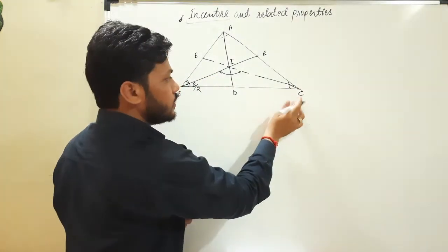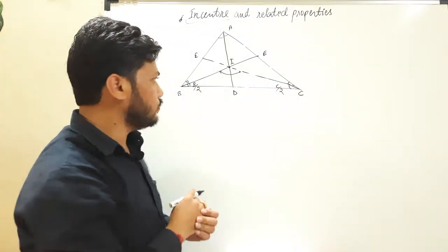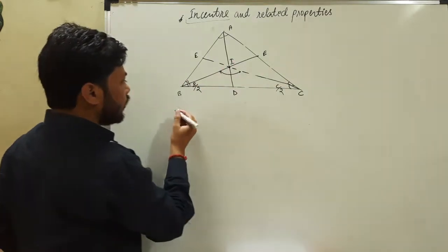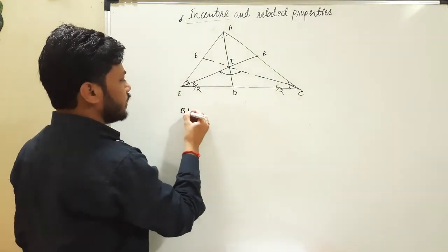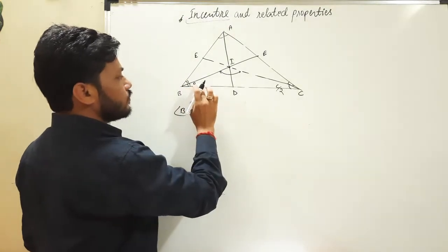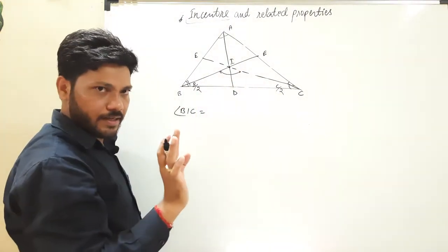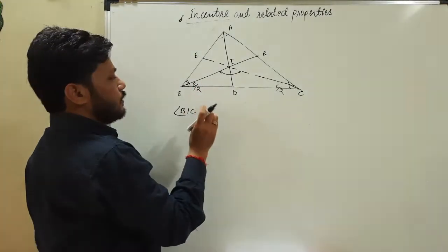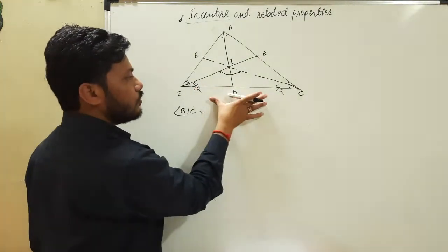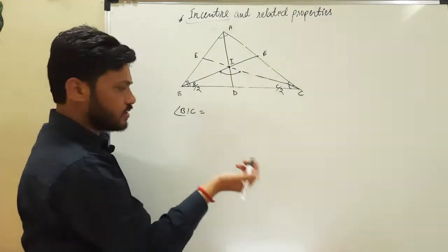This entire angle was C, so this is going to be C by 2, and this is angle BIC. So what is the value of angle BIC? Angle BIC is going to be 180 minus these two angles — meaning 180 minus B by 2 minus C by 2. This can be written as 180 minus half of (B plus C).